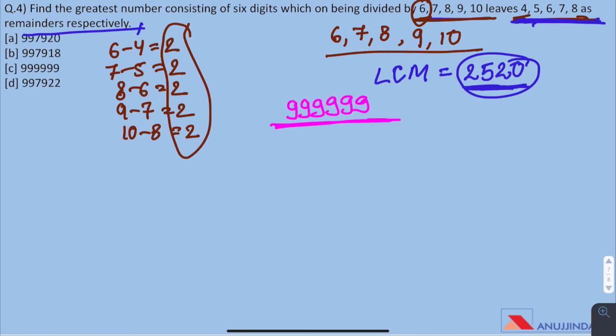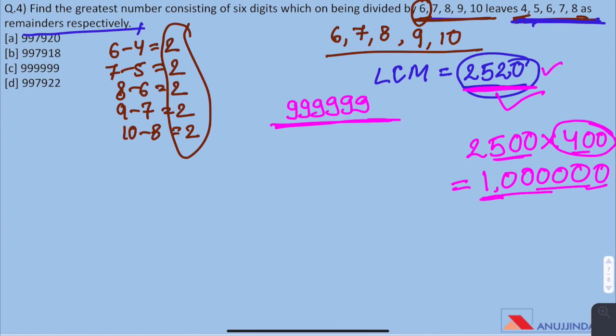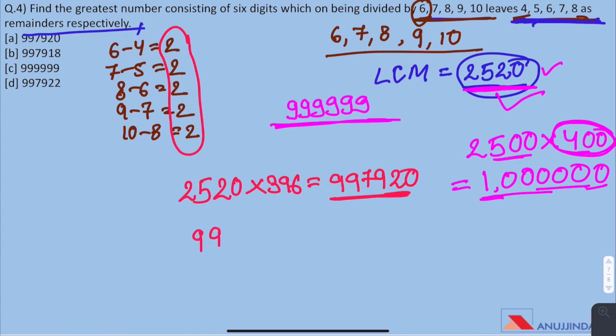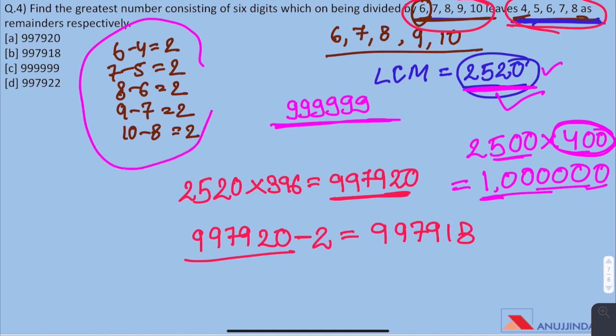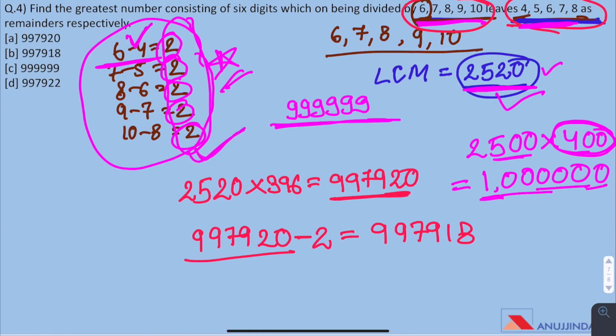After finding the greatest six digit number divisible by 2520, we have to minus 2 from that number so as to get these remainders respectively. Greatest possible six digit number is 999,999. If we multiply 2500 by 400, we get 1,000,000 so we know that we have to multiply 2520 by a number somewhere around 400. Hence, we get 2520 times 396 equals 997,920 and as I have told you earlier, you have to minus 2 from the greatest six digit number which is divisible by 2520 to get a number which gives these remainders when divided by these numbers respectively. And this is the trick that you have to remember to solve such questions where the remainder of each number is different. You have to subtract the remainder from the given number and then you have to subtract the common term from the number you find that is divisible by LCM of these numbers.